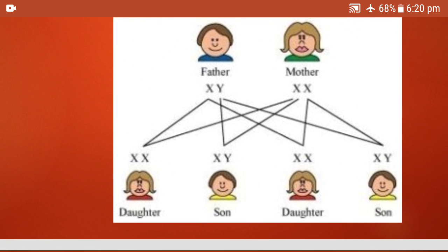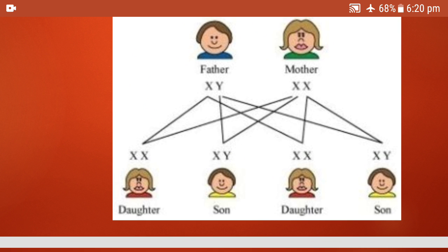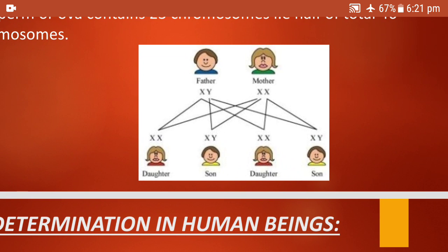Father is XY and mother is XX. For children to be born, one haploid cell comes from the father and one from the mother, making a diploid zygote. Since mother has only one type of sex chromosome — X — all her ova carry X. If the father's sperm carrying the X chromosome fertilizes with the ova of the mother, the born child will be a daughter. If the Y sperm of the father fertilizes with the ova, then a boy is born. So there are 50% chances of producing a boy and 50% chances of producing a girl.